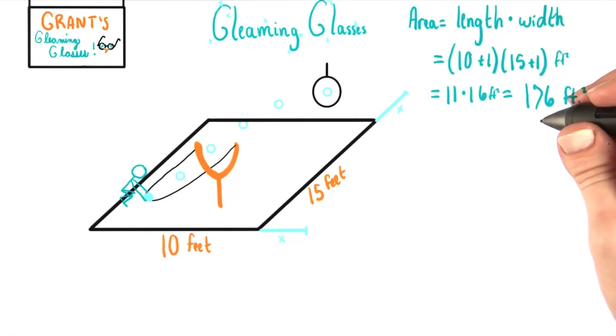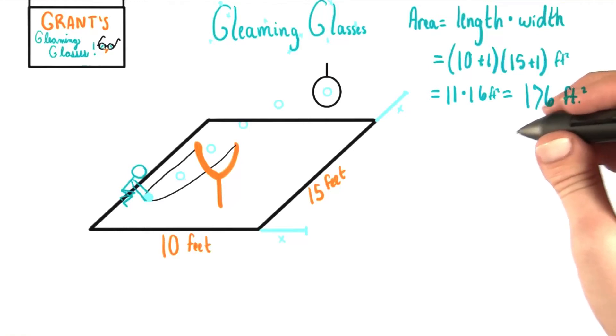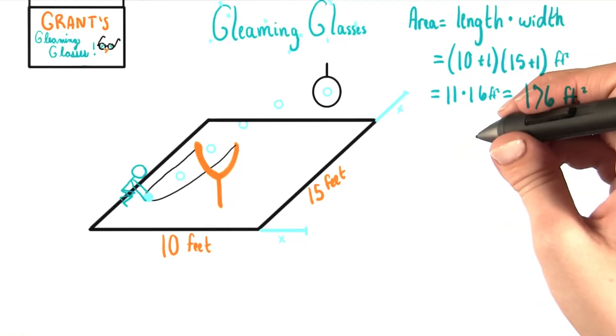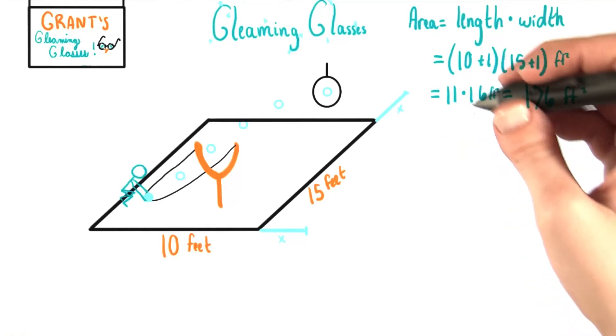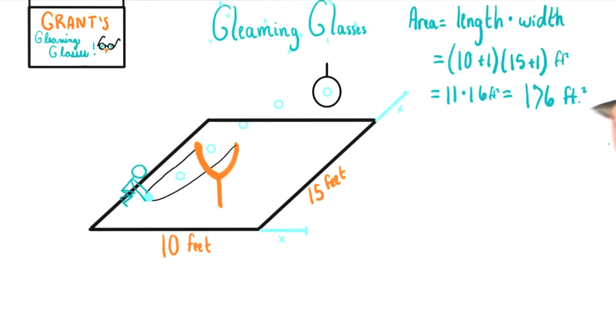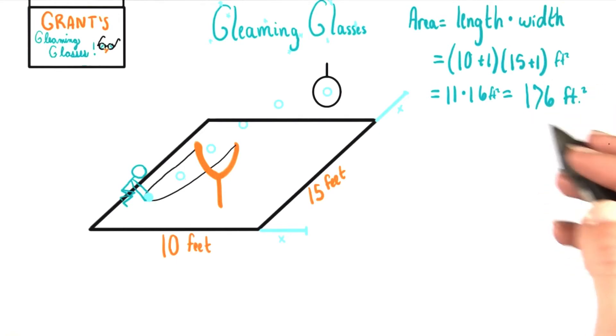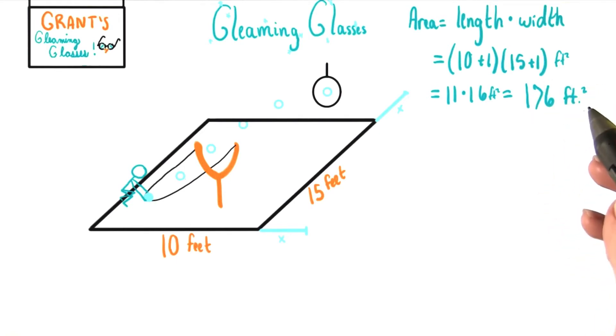So increasing one foot in each direction increased the total area from 150 to 176 feet squared, or in other words, made the area go up by 26 feet squared.